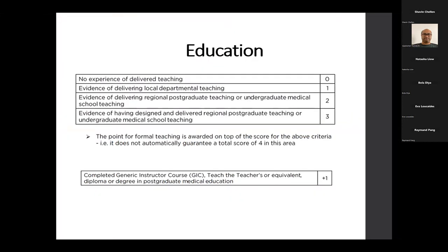Education has two sets of points. One is about the types of education you've delivered, and entirely separate is whether you've got formal teaching qualifications. Somebody with a GIC or Teach the Teachers gets one point. But if you're only delivering local department teaching, the total scope in that domain will be two. Whereas somebody delivering regional postgrad teaching, doing some work with medical students, and who is an NLS instructor, will get themselves three points.